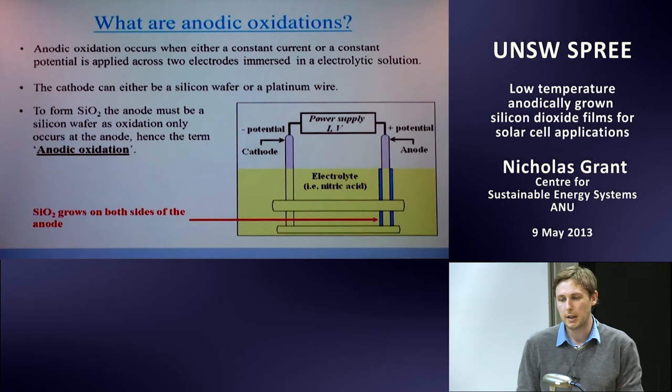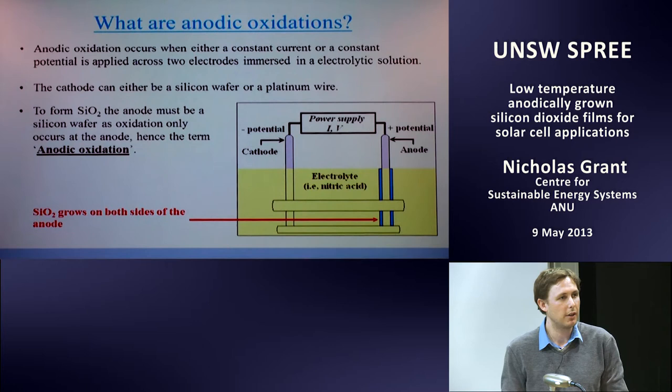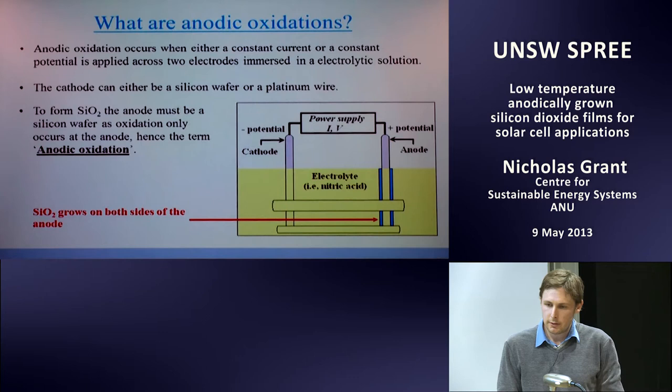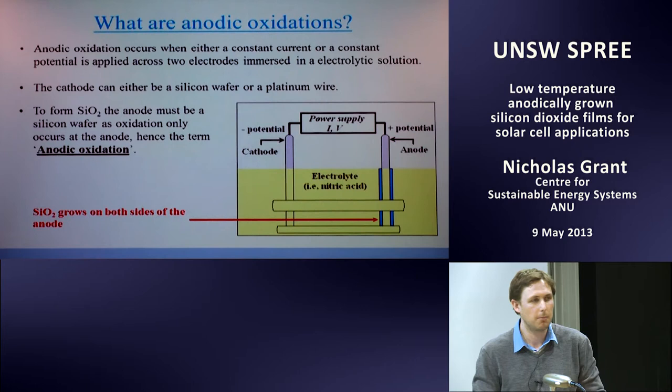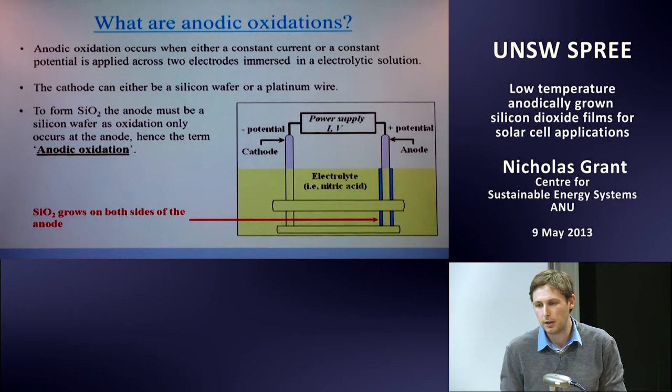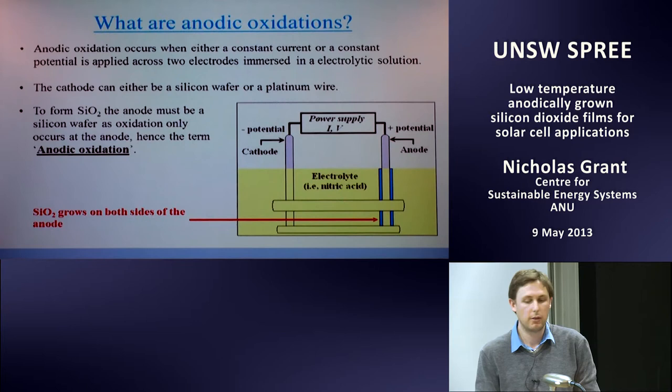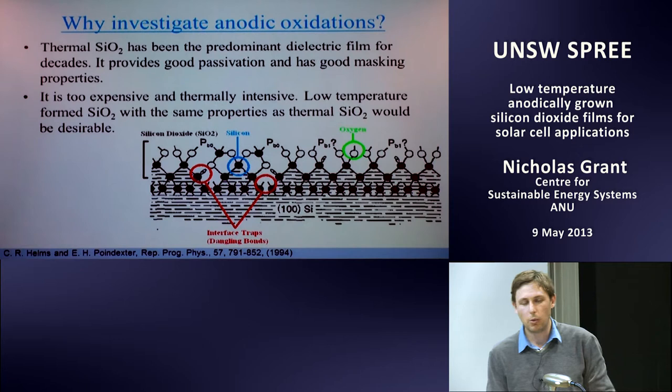So what is anodic oxidation? It's basically a cathode and an anode immersed in an electrolytic solution. You can apply either a constant current or a constant potential. The cathode is always held at a negative potential relative to the anode. The cathode can be a silicon wafer or any metal like platinum that doesn't corrode in the electrolytic solution, but the anode must be a silicon wafer — that's the working electrode that grows the oxide. Hence the term anodic oxidation.